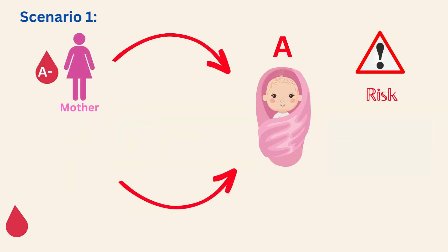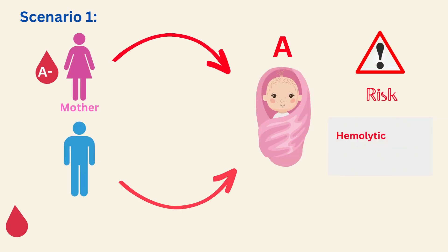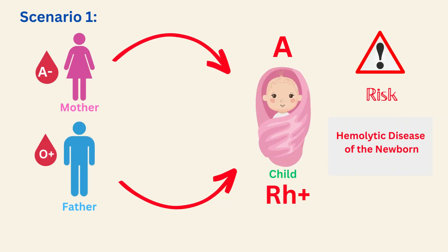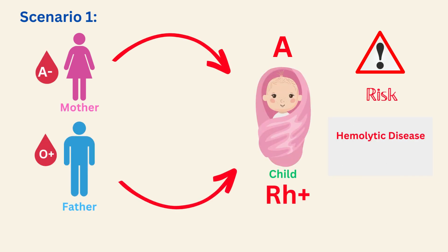Coming to scenario one: the mother has an A negative blood group and the father has an O positive blood group. If a child gets the blood group type from the mother, which is type A, and the Rh factor from the father, which is Rh positive, then there is a high risk of hemolytic disease for the newborn.